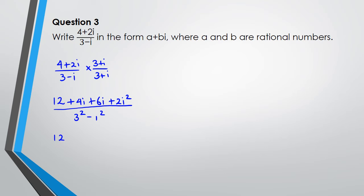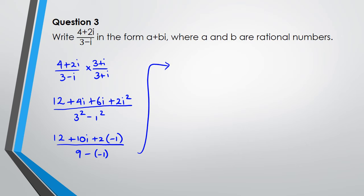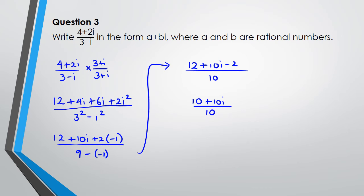In the numerator I have 12 plus 10i, and since i-squared equals negative 1, the 2i-squared becomes minus 2. In the denominator: 3-squared is 9, and minus i-squared becomes minus negative 1, so the denominator is 10. That gives numerator 12 plus 10i minus 2, which is 10 plus 10i, divided by 10.